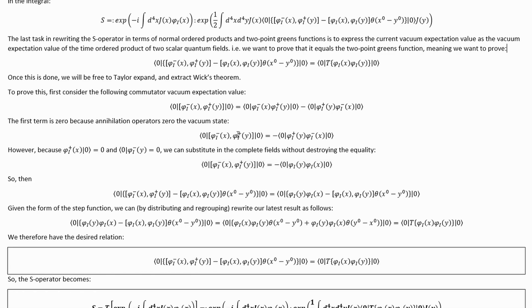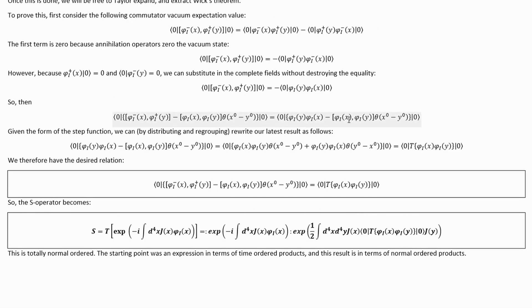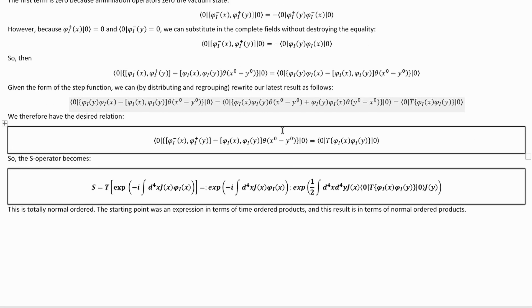So then we can substitute this result back into that quantity we were originally trying to simplify right there, and that gets us to this. Then, given the form of the step function, we can, by distributing and regrouping, rewrite our last result in this way. Now, basically, we're writing out this commutator and then multiplying this through and then refactoring and simplifying, given the properties of the step function, which gets us to here straightforwardly. And this is just a time-ordered product. So we have our final relation. I've stated it down here.